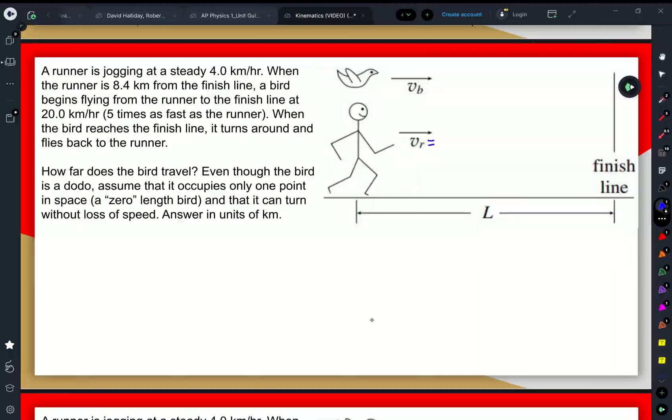When the runner is 8.4 kilometers from the finish line, so that means that if they're currently at a position of 0 meters, that means that that finish line is a position of 8.4 kilometers.